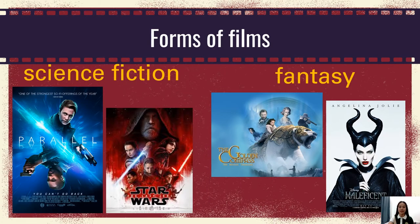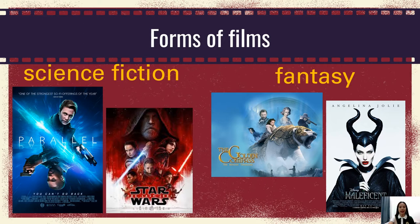We also have science fiction — a film genre that uses speculative, fictional, science-based depictions of phenomena not fully accepted by mainstream science, like alien worlds, time travel, and robots or other technologies. And another one is fantasy — a film genre with fantastic themes, usually magic, supernatural, mythology, and folklore. Fantasy films often have the element of magic, myth, and wonder.